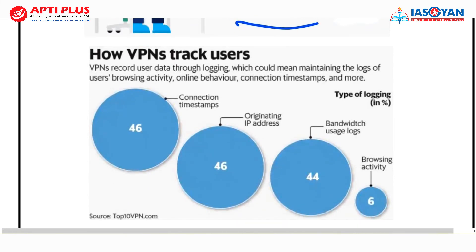However, VPN can track user data — how the user is logging in, what activity they perform, online behavior, different connections used, and time of use. All these footprints are stored in the VPN.